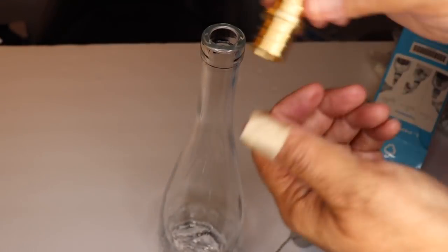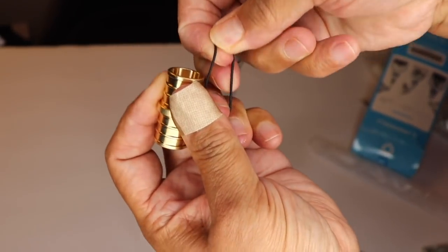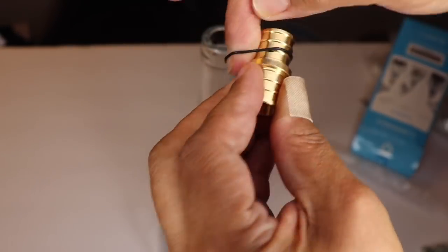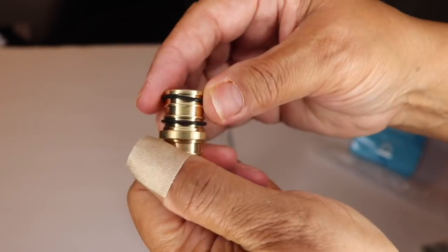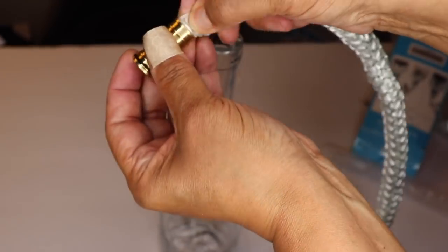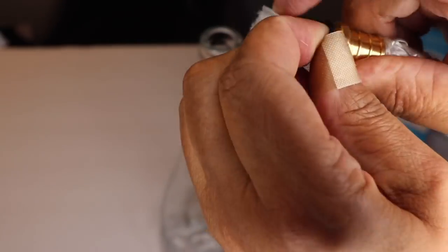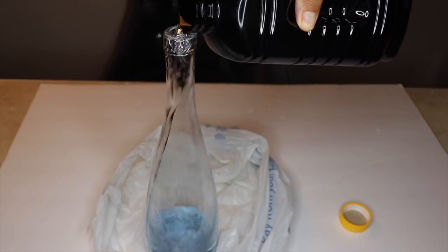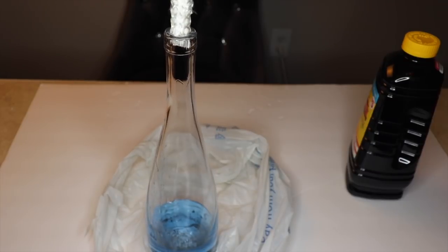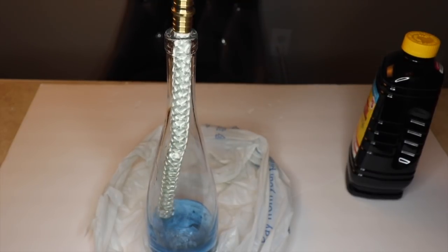Now I'll show you how simple it is to put the wine bottle tiki torch together. Add two of the rubber rings to the brass wick holder. Now put the wick inside the brass wick holder. Pour some tiki torch fluid inside the bottle. Insert the wick and it's ready to go.